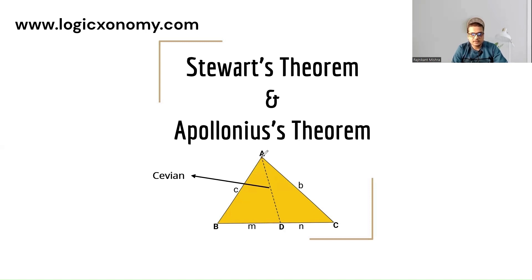Here in this triangle ABC, AD is called a cevian. D is an arbitrary point on side BC. If you join this point D to the vertex A, then this line segment is known as a cevian. And in case BD is equal to DC, this AD is known as the median of the triangle.